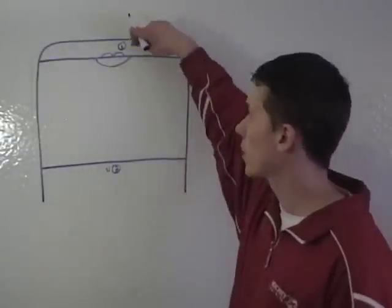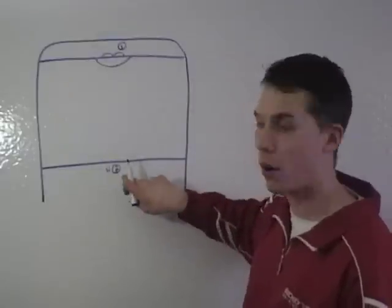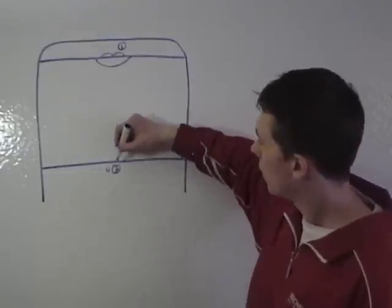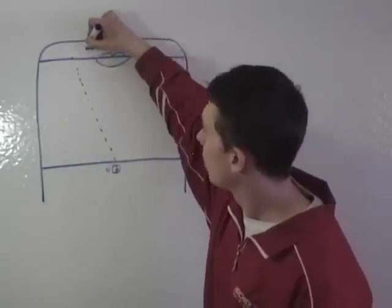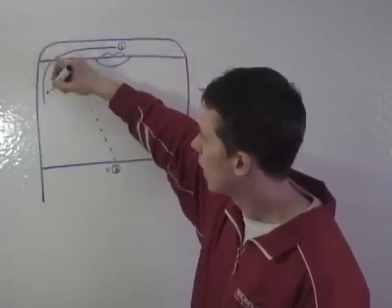We've got one forward that starts behind the net right here, and another forward with the pucks up here. This forward is going to dump the puck into the corner. The forward behind the net is going to skate out, kick the puck up, and cut along the wall.